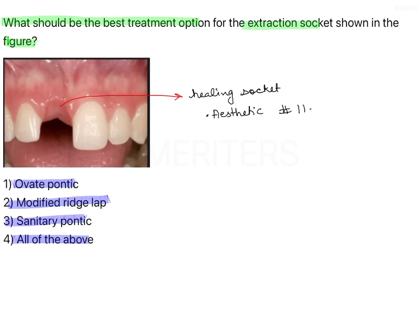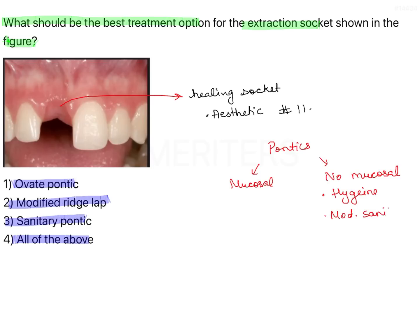We are talking about the choice of Pontics. Pontics can have mucosal contact or have no mucosal contact. The ones with no mucosal contact are not indicated in aesthetic areas because there will be a gap seen between the tissue and the Pontic. So Hygiene Pontic — that is Sanitary Pontic and Modified Sanitary Pontic — are not used in anterior areas. Therefore Sanitary Pontic is not the correct answer, and all of the above is also eliminated.